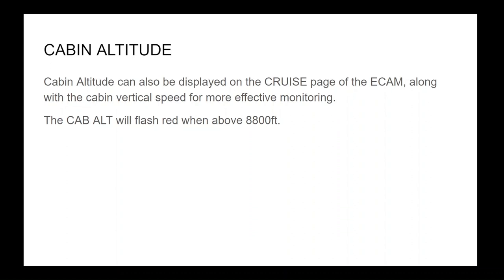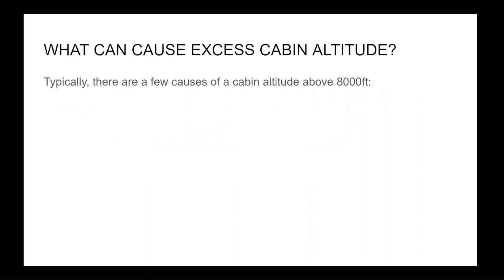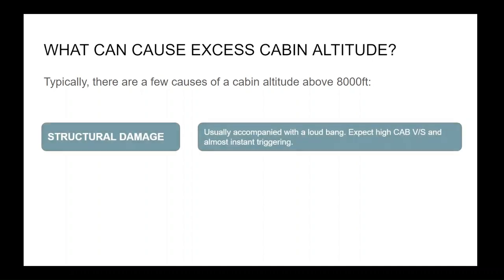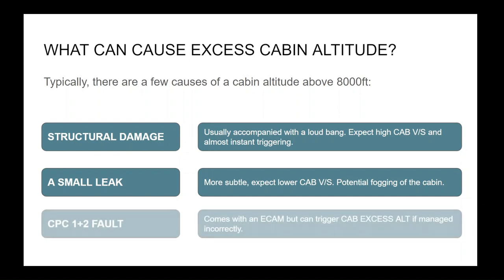The cabin altitude will start flashing red when it goes above 8,800 feet. Typically, there are a few causes of a cabin altitude above 8,000 feet. Structural damage is usually accompanied by a loud bang — expect a high cabin vertical speed and an almost instant triggering. A small leak can also cause excess cabin altitude; this is more subtle, so whilst cabin VS will still rise, expect it to do so at a slower rate. There could also be a foggy look in the cabin.